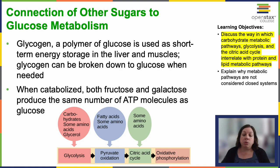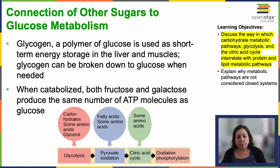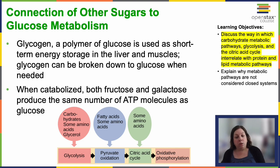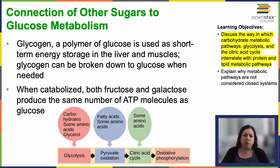Sucrose is a disaccharide formed from glucose and fructose, and it undergoes digestion in the small intestine. Glucose and fructose are absorbed separately into the bloodstream. Fructose is one of the three dietary monosaccharides — along with glucose and galactose — that are absorbed directly during digestion. Both fructose and galactose catabolism yield the same ATP production as glucose; they just undergo some minor modifications to go through the process.